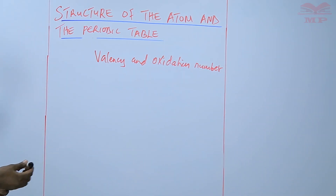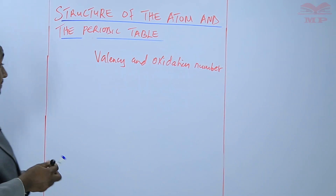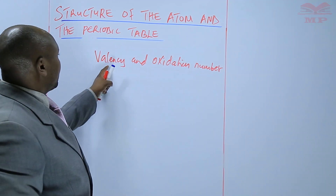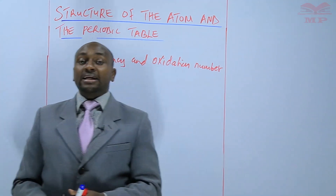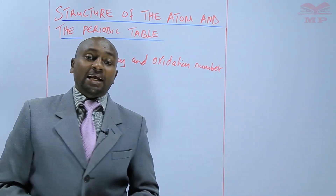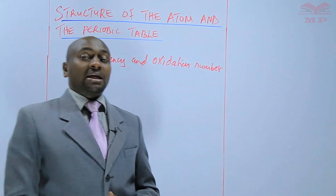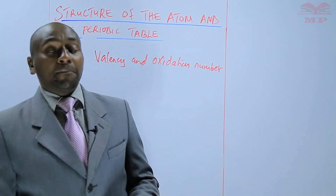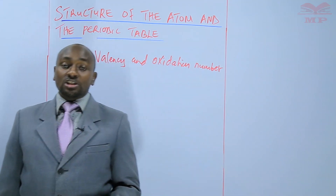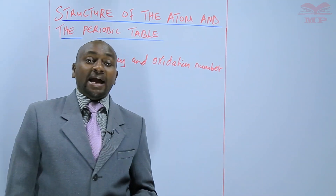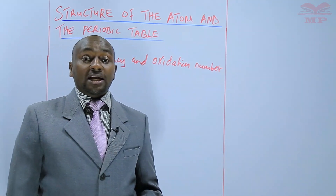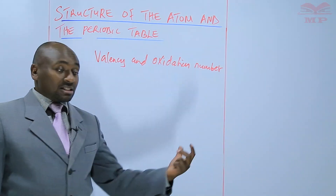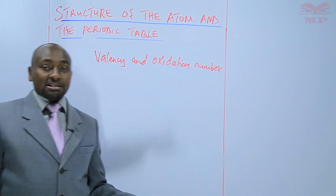First, we will define what is valency. We refer to valency as the combining power of an element — the number of electrons gained or lost by an atom during ion formation. The number that it gains or loses is the valency.